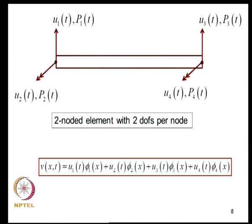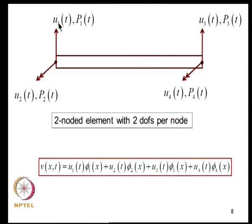To obtain a finite element discretization, we take the element to have two nodes. At each node the translation and the gradient (slope) are the nodal degrees of freedom. U1 is the displacement V at X=0, U2 is dV/dX at X=0, U3 is V at X=L, and U4 is dV/dX at X=L. This is a two-noded element with two degrees of freedom per node, giving four total degrees of freedom. The displacement field is expressed in terms of U1, U2, U3, U4 and four interpolation functions phi1, phi2, phi3, phi4.